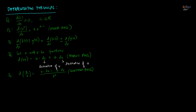Before we proceed to the examples, let me show you the different notations for the derivative of a function. You already know that dy over dx means the derivative of y with respect to x. This is the same as y prime — conventionally y prime equals dy over dx. If the function is written as f of x, the derivative is denoted f prime of x; similarly g prime of x, h prime of x, and so on.